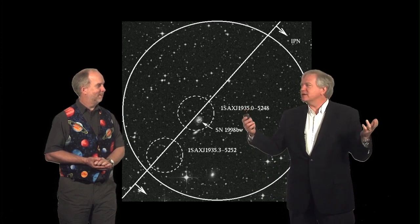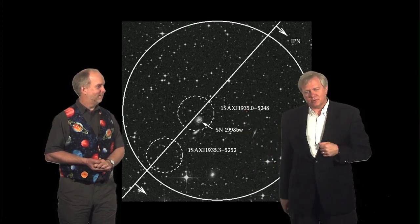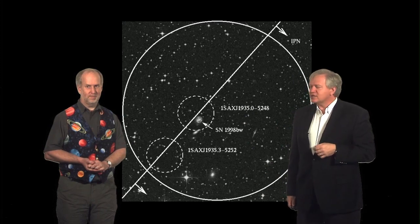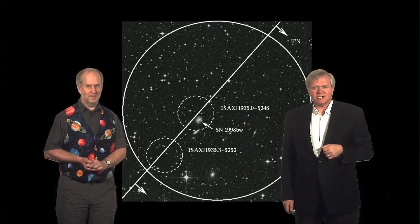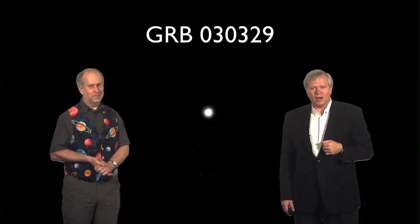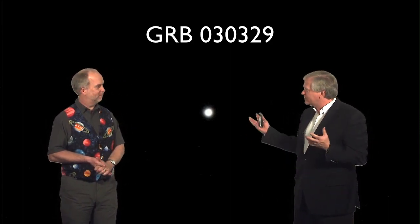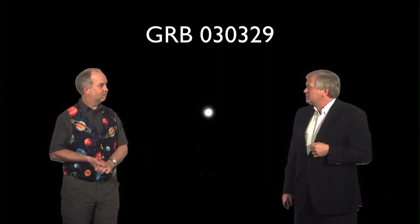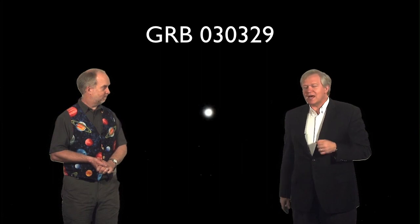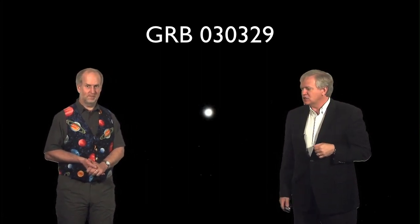It was cloudy up at Siding Spring, which is the main observatory up near Coonabarabran. But he said, what the heck, I'll point the telescope up towards where this thing is. And this is what he saw. He didn't see any stars, but he saw one thing beaming through the clouds. And he realized it must be very bright. To see it through the clouds with the one-meter telescope, this must be incredibly luminous. It was almost bright enough to be seen with a very small amateur telescope.